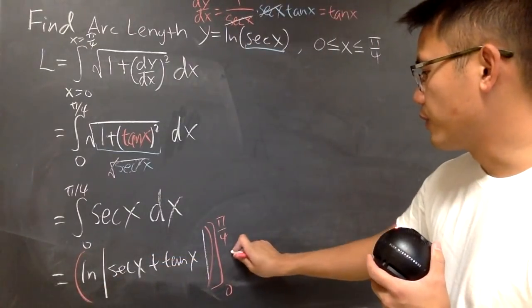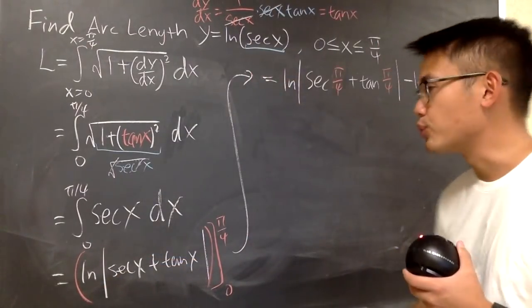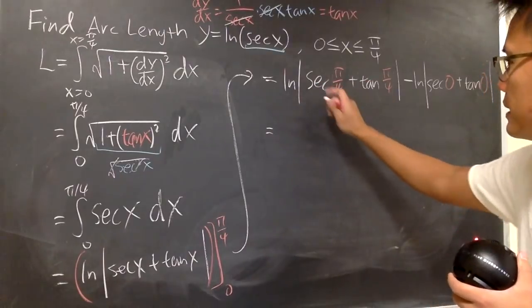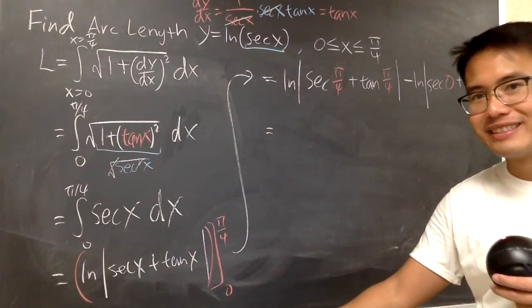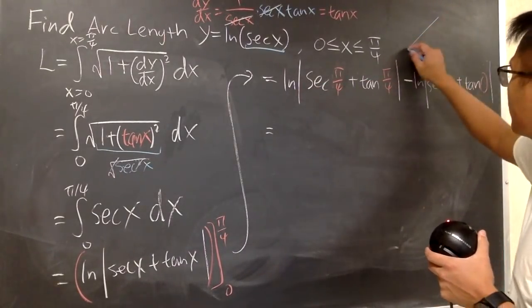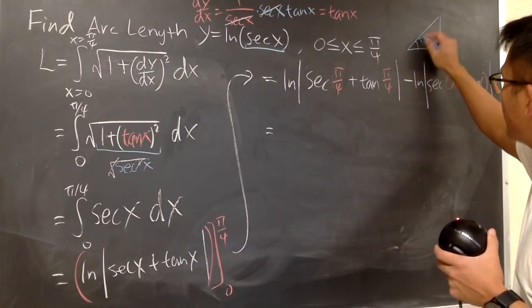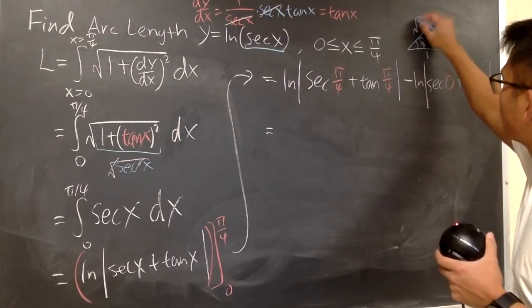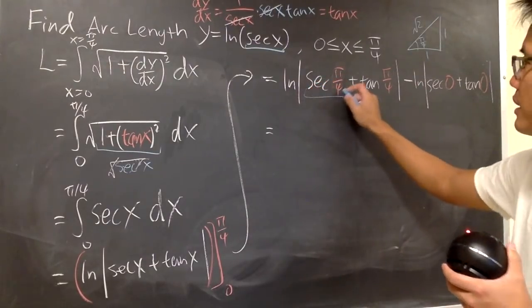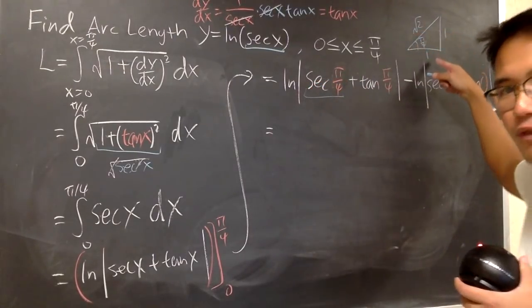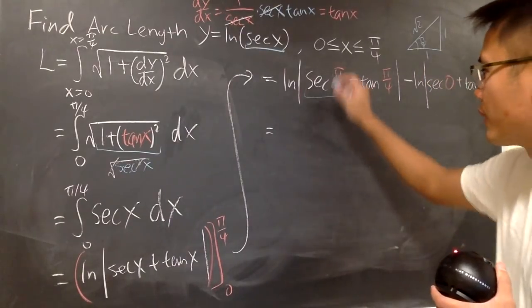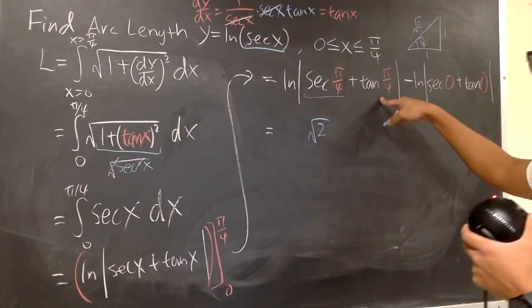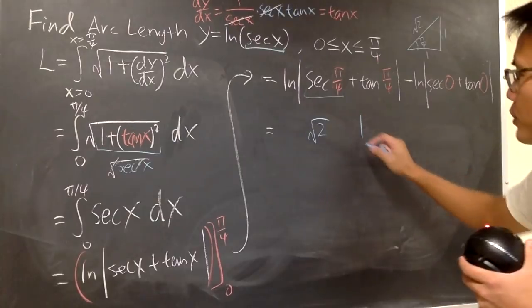So I will do it right here for you guys. And now let's see what we have. Well, sec(π/4) is what? Let's refer back to a right triangle real quick. Special right triangle π/4, and the ratios of the sides are 1, 1, √2. So this right here is hypotenuse over adjacent. So you have √2 right here. And then tan(π/4) is just 1 over 1, which is just 1.